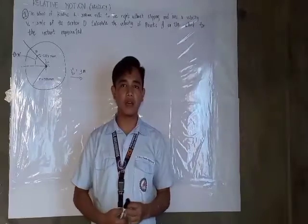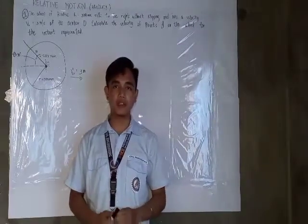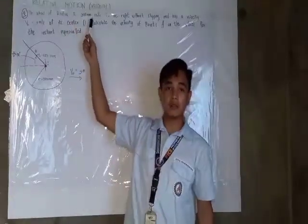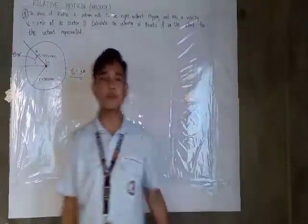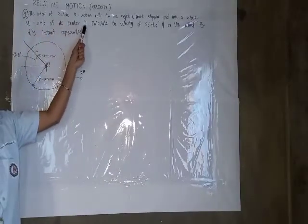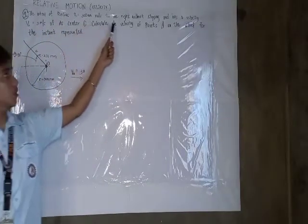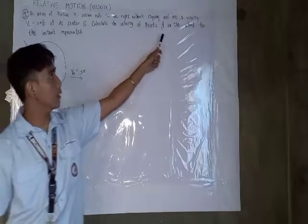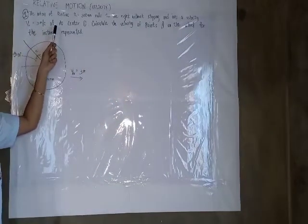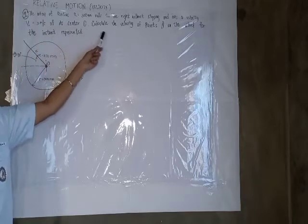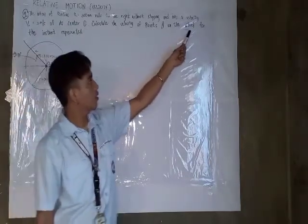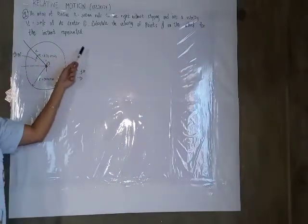In this video, we're going to tackle the topic from dynamics of rigid body, specifically relative motion in terms of velocity. For example number one, we have a wheel of radius R equals 300mm that rolls to the right without slipping, and has a velocity of 3 meters per second at center O. Calculate the velocity of point A on the wheel for the instant represented.